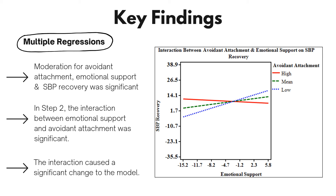Two moderation models were significant. The first was the model for avoidant attachment, emotional support, and systolic blood pressure recovery. In step two, the interaction between emotional support and avoidant attachment was significant, with significant covariates including anxious attachment, instrumental support, heart rate reactivity, systolic blood pressure reactivity, baseline systolic blood pressure, baseline diastolic blood pressure, and baseline heart rate. The interaction caused a significant change to the model, suggesting that the relationship between emotional support and systolic blood pressure recovery was stronger when avoidant attachment was lower. For those high on avoidant attachment, as emotional support increases, systolic blood pressure recovery carryover decreases; while for those low on avoidant attachment, as emotional support increases, systolic blood pressure recovery carryover increases.